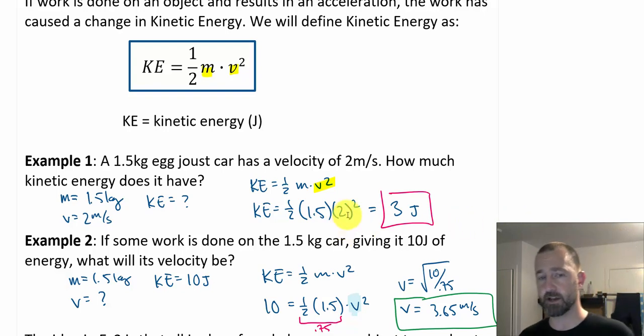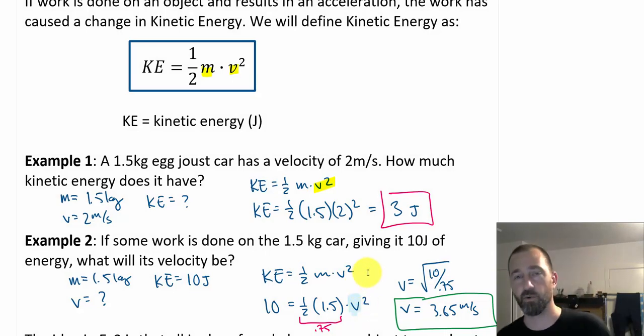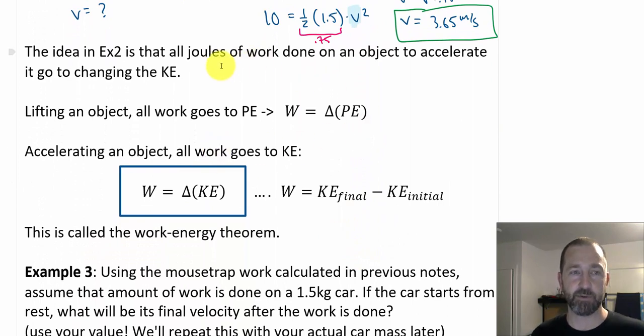So is it going faster than 2 meters per second? Yeah, definitely. But it's not going three times faster. Again, the change in velocity will end up being squared, which has a much greater impact on the end result than just simply doubling it or tripling it. Let's take a look now at that whole work-energy theorem. In example 2, all the work done on the object is going to accelerate the object and change its velocity. We could technically throw an object up into the air, give it velocity and height, which would change its potential and kinetic at the same time.